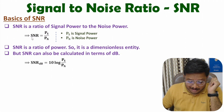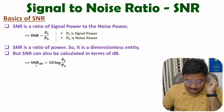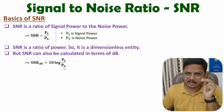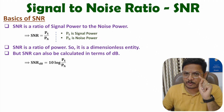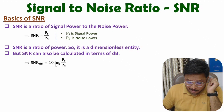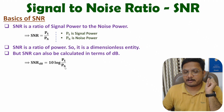We also calculate SNR in terms of decibel. To calculate SNR in terms of dB, one should know it is 10 log of PS by PN. So when you calculate SNR in terms of dB, we are calculating 10 log of the ratio of signal power to the noise power.